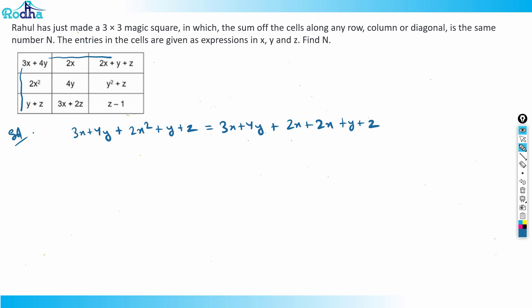So if you solve it, 3x + 4y will get cancelled and y + z, y + z will get cancelled. So now I'm left with 2x² equal to 4x. Therefore, I'll be getting x equal to 2.